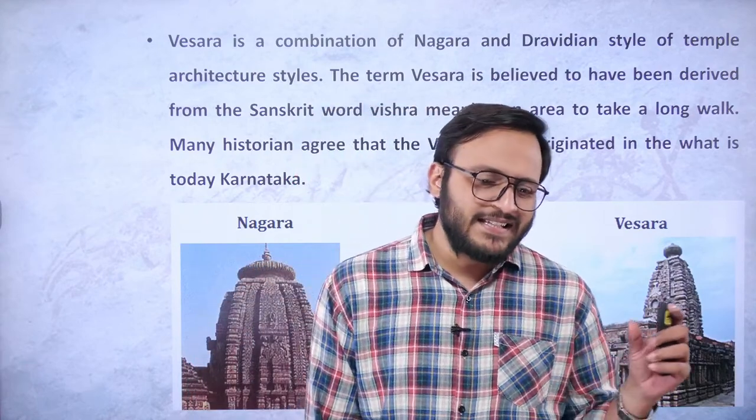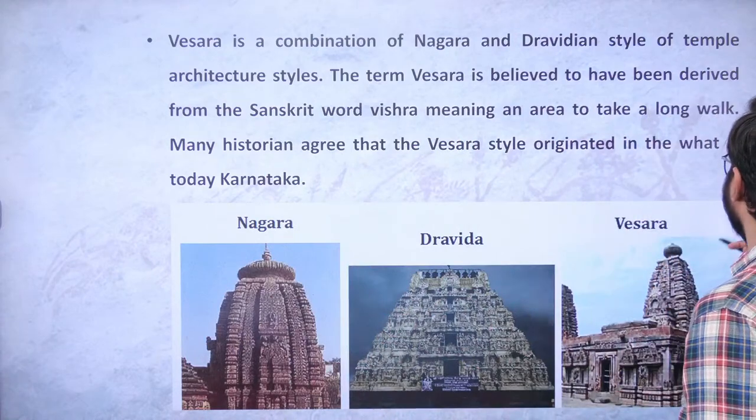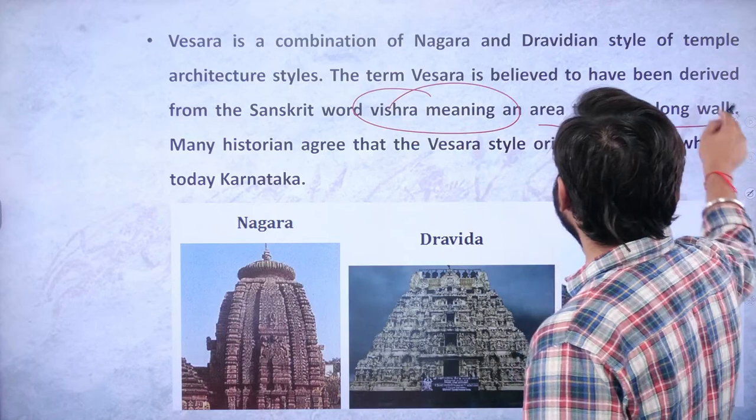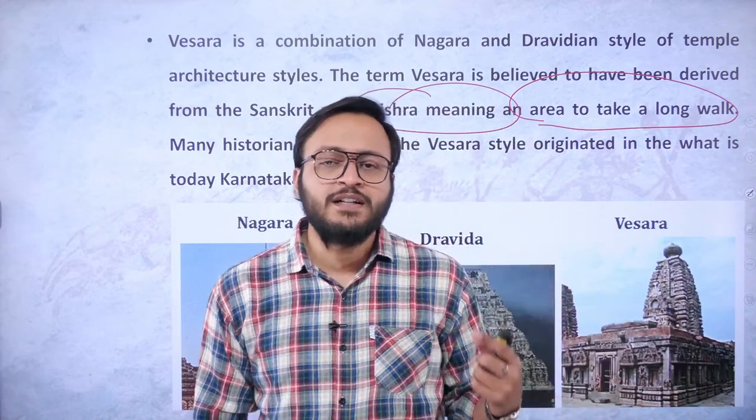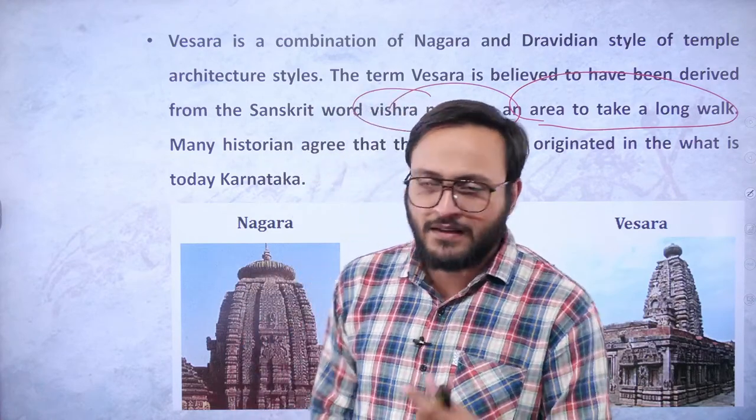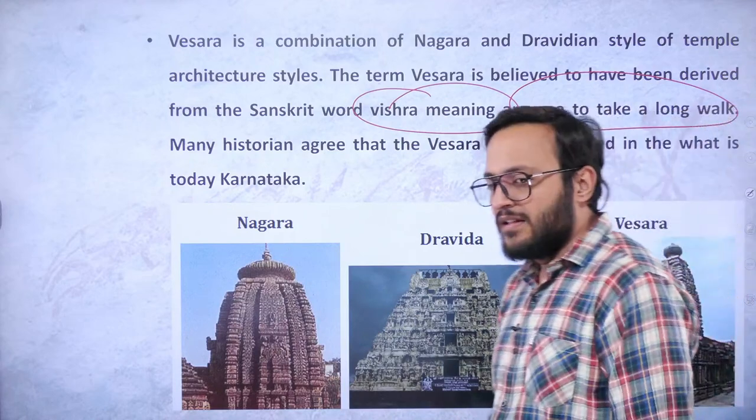Moving to the topic: Veser temple architecture. What is the meaning of Veser? Basically, this is the combination of Nagar as well as the Dravidian temple styles. The Sanskrit term 'Vishra' means 'an area to take a long walk.' This term is used to denote the Veser temple style because it involves long pedestrian walkways, and if you observe any Veser-style temple, you will see a lot of zigzag-type structures.